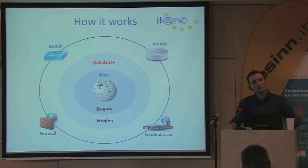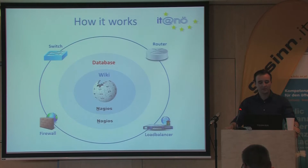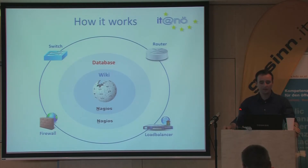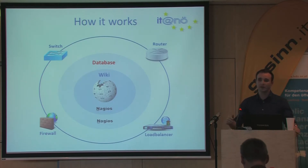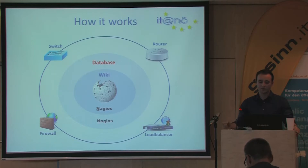On one side we have our data in this database from the running configuration. On the other side we have our network documentation with Semantic MediaWiki. We use Nagios to compare the documentation with the running configuration, and if there are any differences, we get a notification. Because of this process we can be sure that our documentation is always up-to-date.